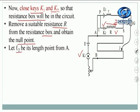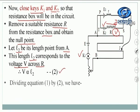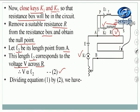Let L2 be the length from point A. This length L2 corresponds to the voltage V across R. This is the voltage V and not the EMF, because V is less than E1. So V is proportional to L2. Therefore, dividing equation 1 and 2: E1 proportional to L1 and V proportional to L2 gives us E1 by V equal to L1 by L2.